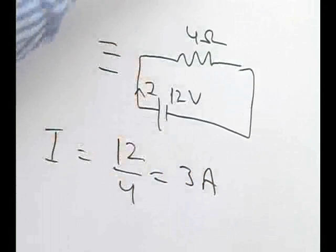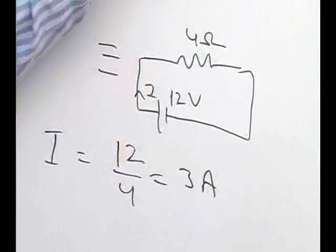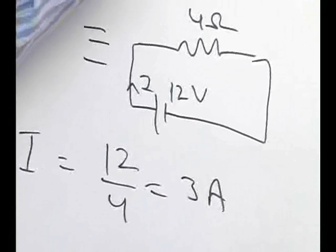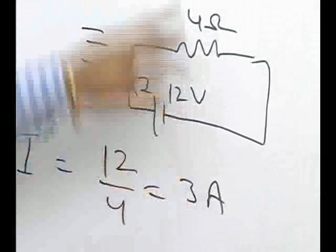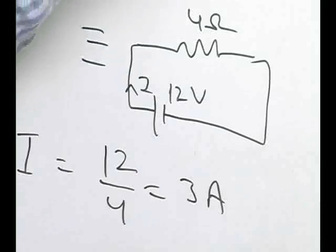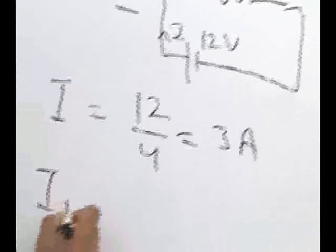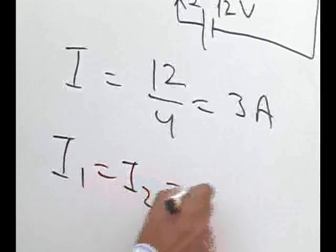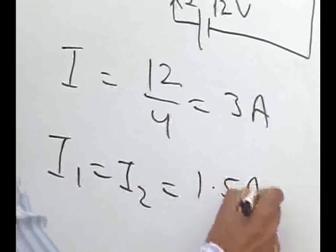Now, if you see both branches in which I1 and I2 are going, they have 8 ohm resistance. So the current 3 amperes divides equally in I1 and I2, and both I1 and I2 are equal to half of 3, that is 1.5 amperes.